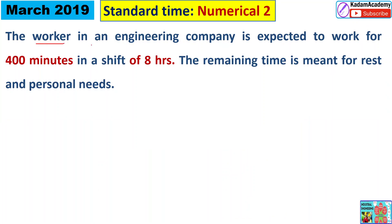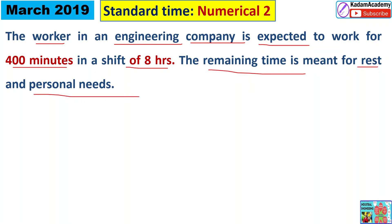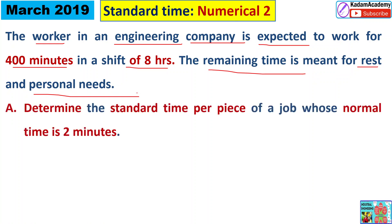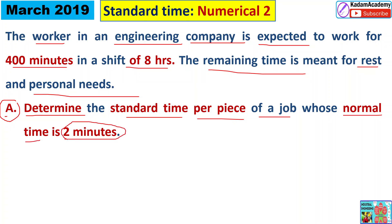The given numerical is: workers are working in an engineering company and are expected to work for 400 minutes in a shift of eight hours. The remaining time they use for rest and personal needs. First, we have to determine the standard time per piece of job. The normal time given is two minutes.